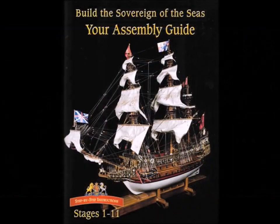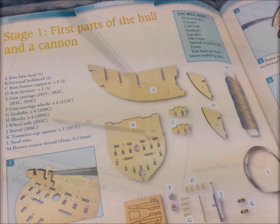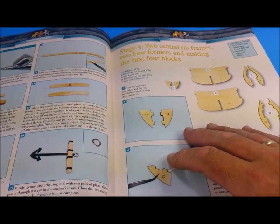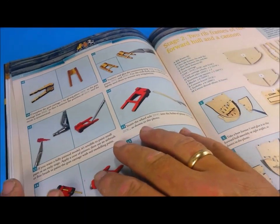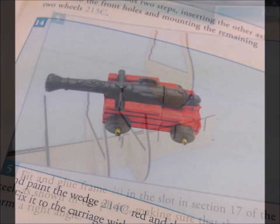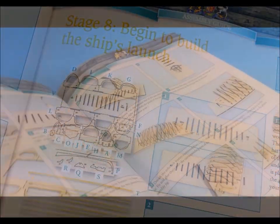The included instructions are in color and are laid out very well. Following the instructions, the hull is broken down into sections. The instructions are laid out so that after each section of the hull is constructed, there is an alternate assembly such as the cannon or launch that need to be built. This allows the glue on the hull sections to fully cure before moving on.